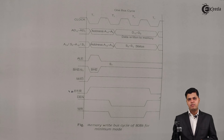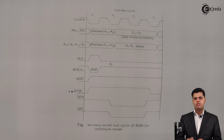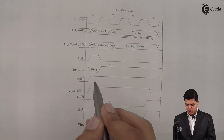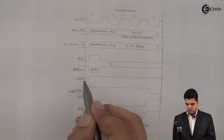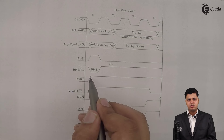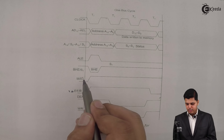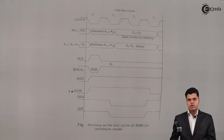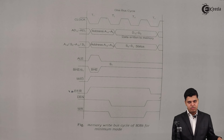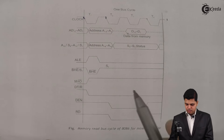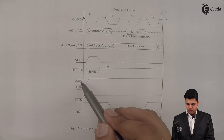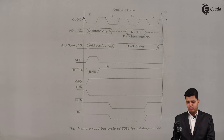This completes the memory read and memory write cycle for the 8086 microprocessor in minimum mode configuration. The same operation is performed for IO read and IO write as well. The only difference is the M/IO bar signal — when M/IO bar is 1, it specifies memory access; when M/IO bar goes low, it signifies IO devices. So for IO write and IO read, M/IO bar goes low, and the combination of M/IO bar with the read or write bar enables the respective IO read or write cycle.